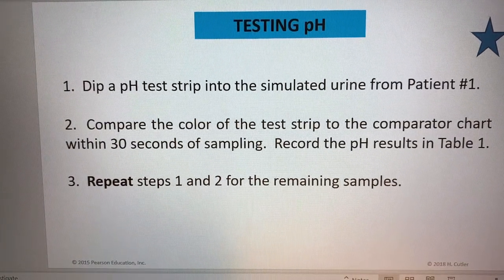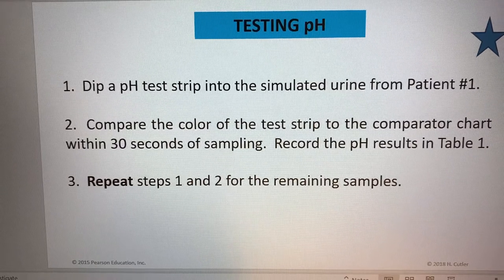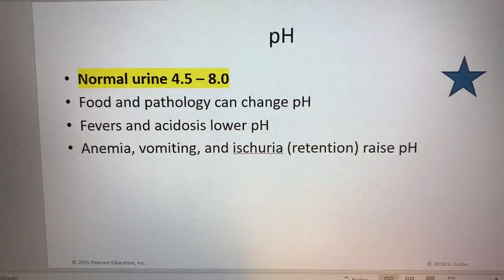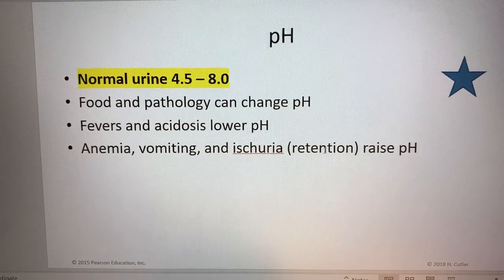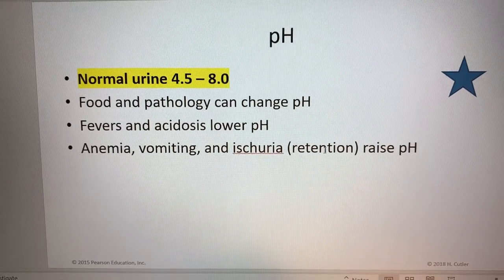I want to bring us back to testing the pH, and the pH value that you'll need to be familiar with is that normal urine is somewhere between 4.5 and 8.